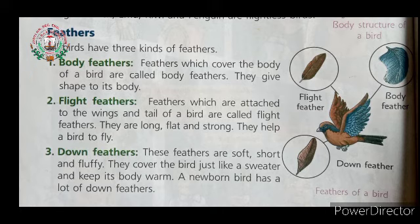A newborn bird has a lot of down feathers. So children, all birds have three kinds of feathers — body feather, flight feather, and down feather. Let's look at each one, starting with body feathers.